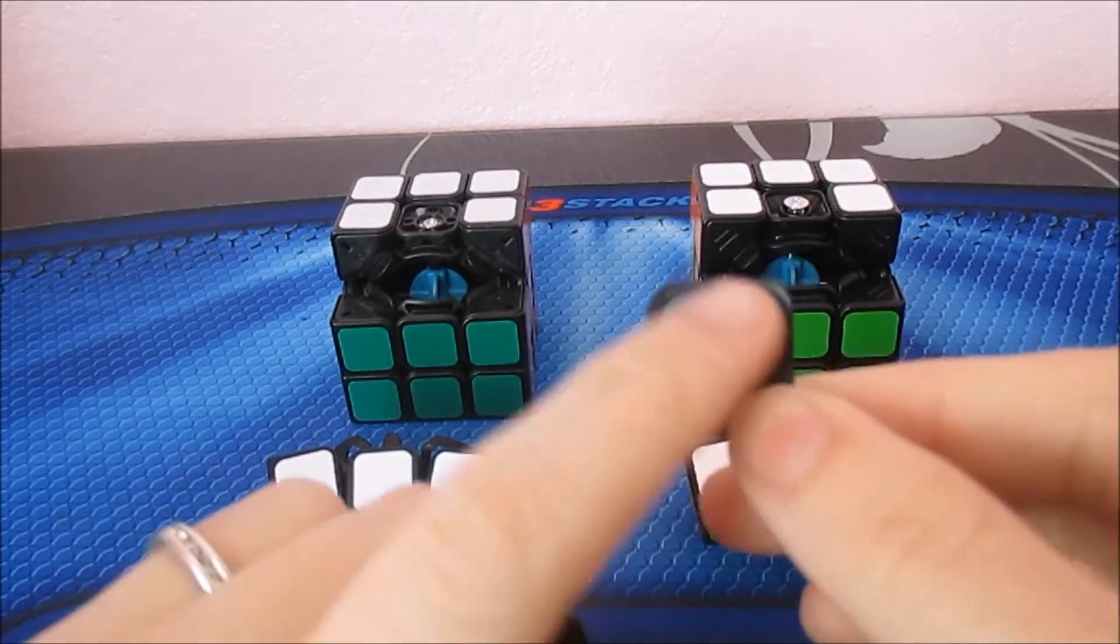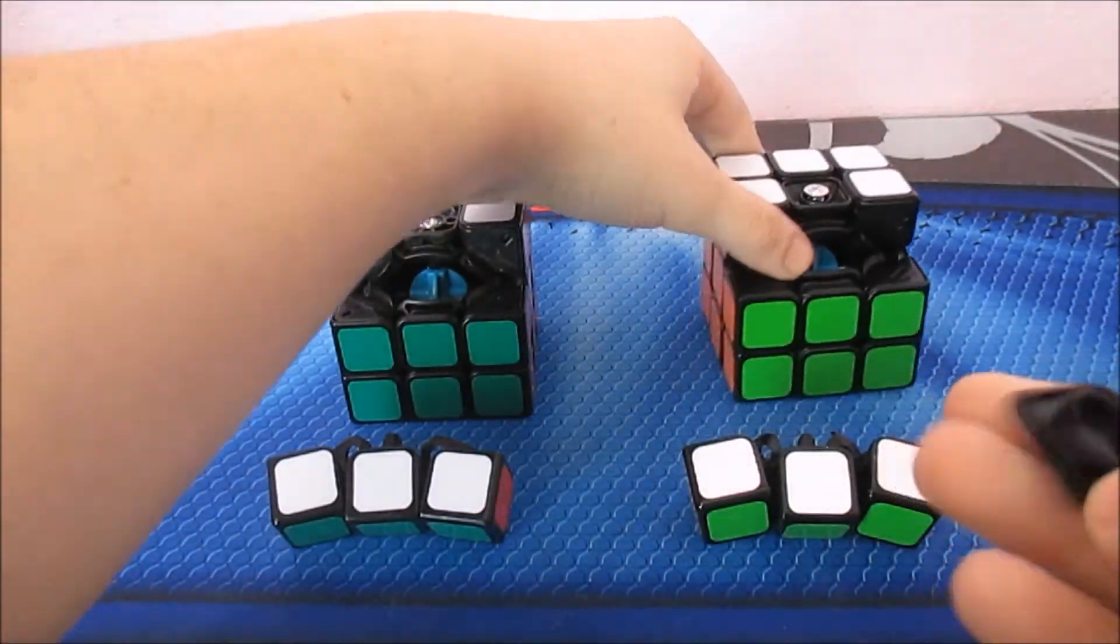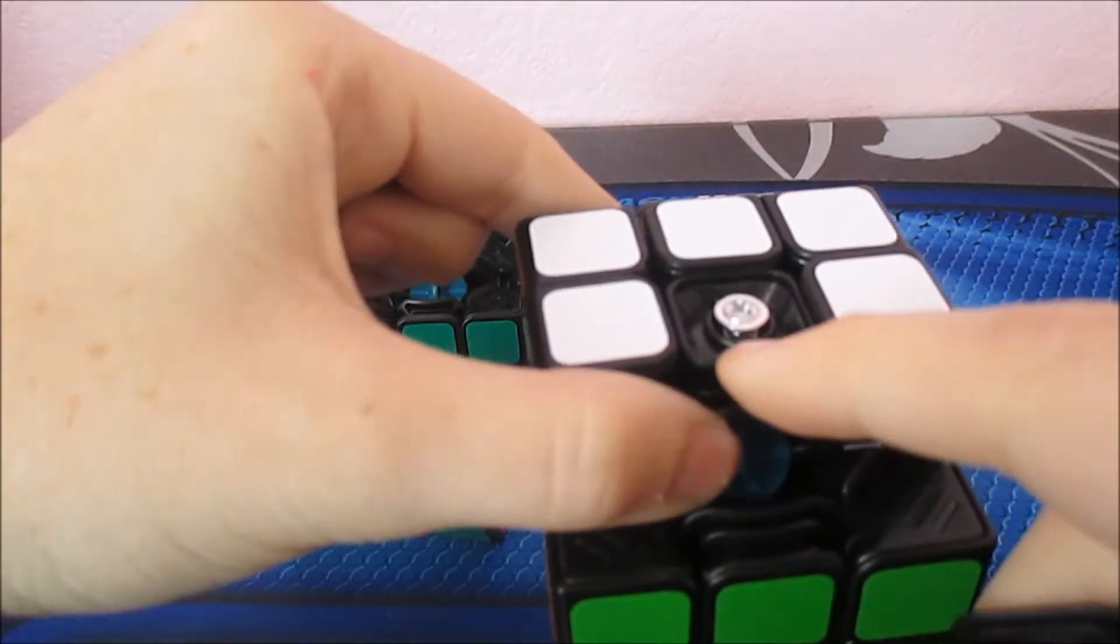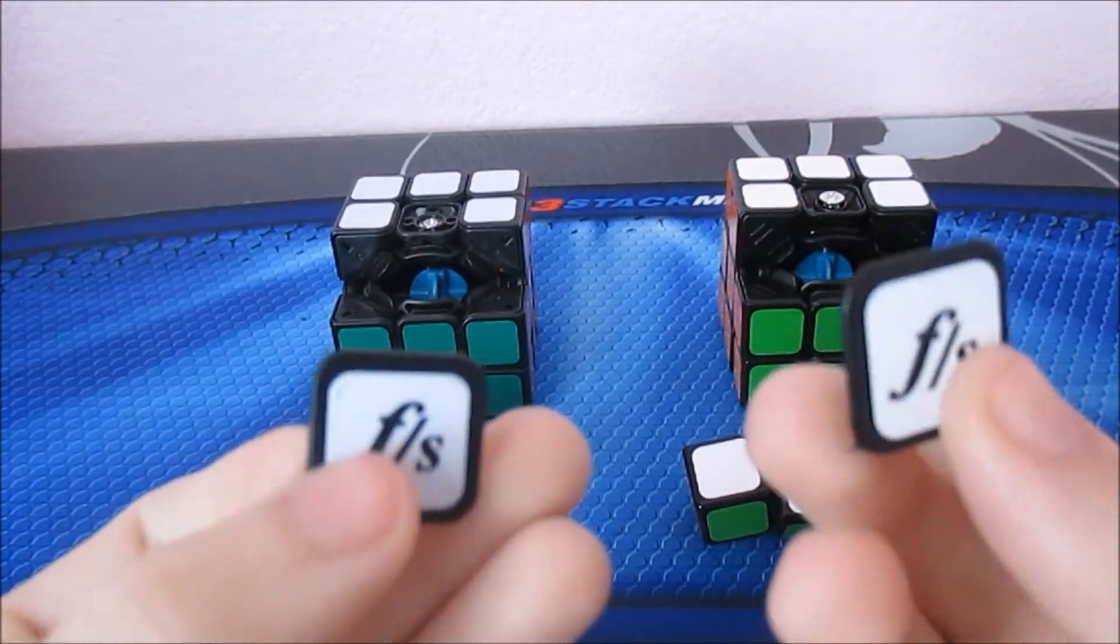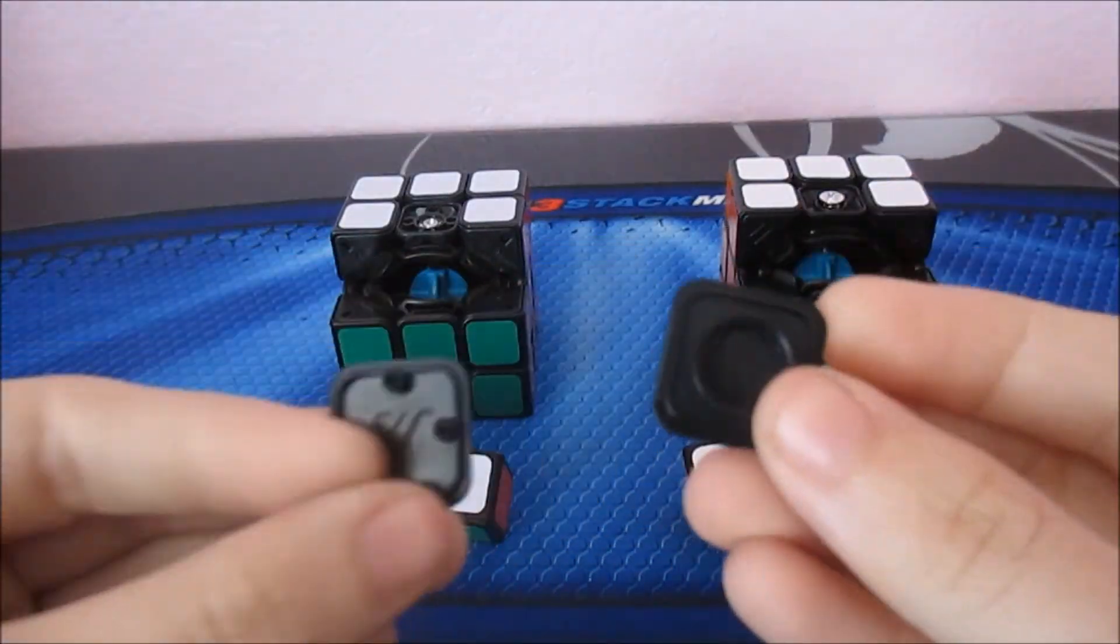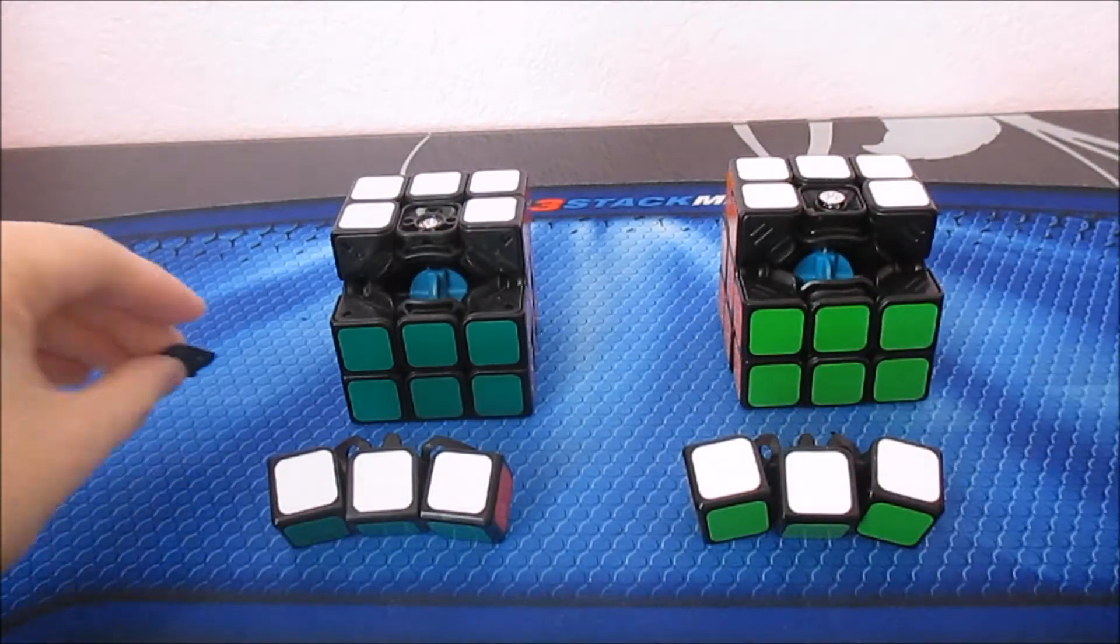And then over here on the Guangying, we just have one sort of circular piece, and this piece actually fits over the screw, and it kind of sits in over that little plastic piece. So, those are actually quite different. It's just a different way to secure the center cap to the cube. So, those are the center caps.